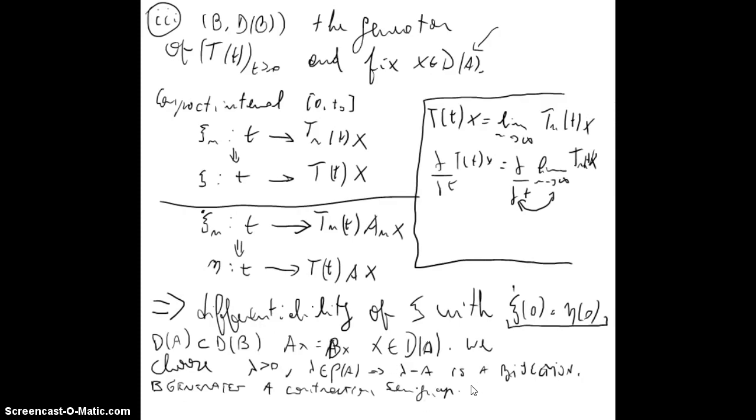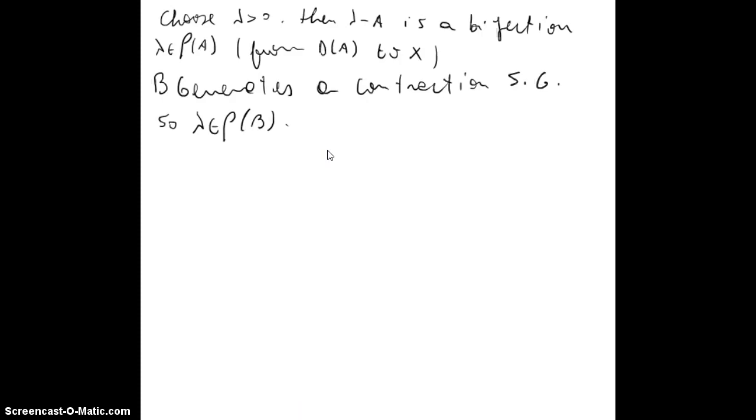We know that omega in a contraction semigroup is zero. So we have that lambda will be greater than zero and so lambda will be in the resolvent set. So lambda is in the resolvent set of B, and lambda minus B is also a bijection. And now from DB to X, lambda minus A was a bijection from DA to X.